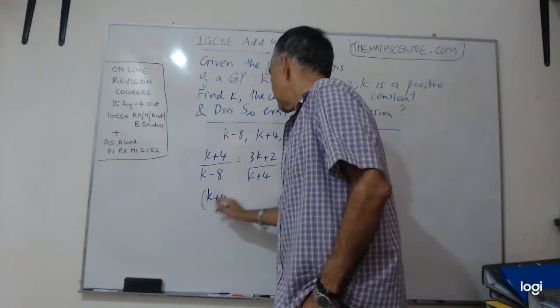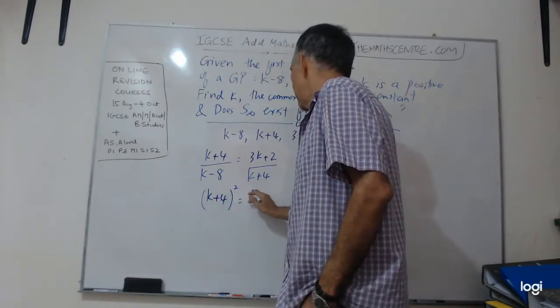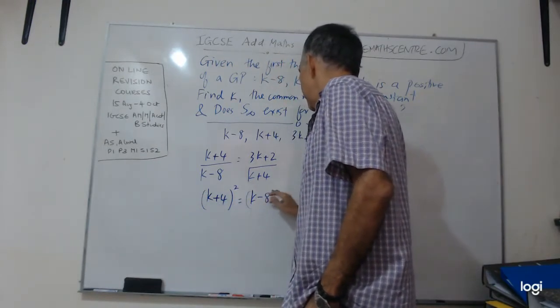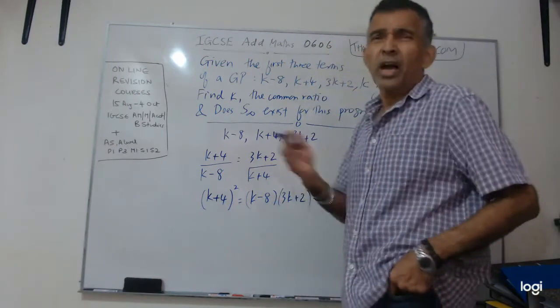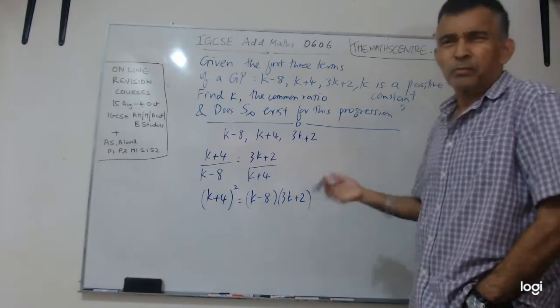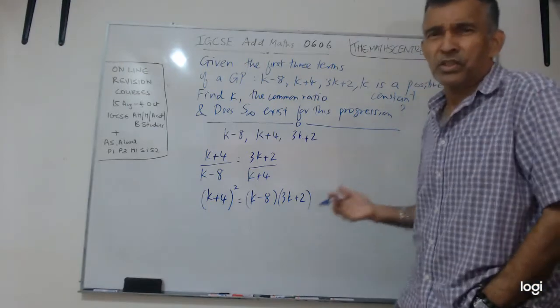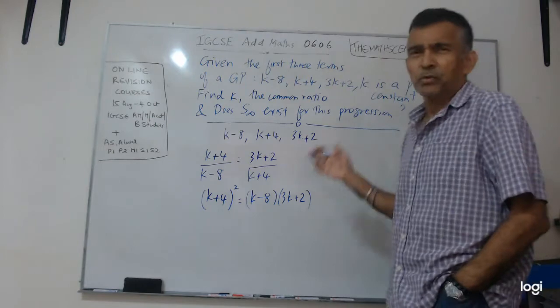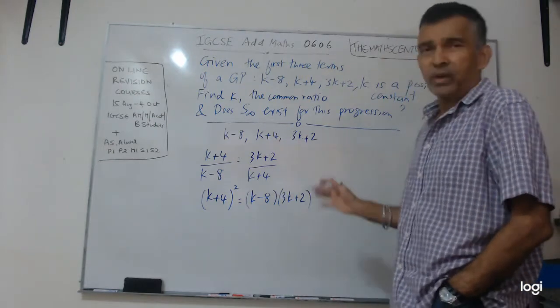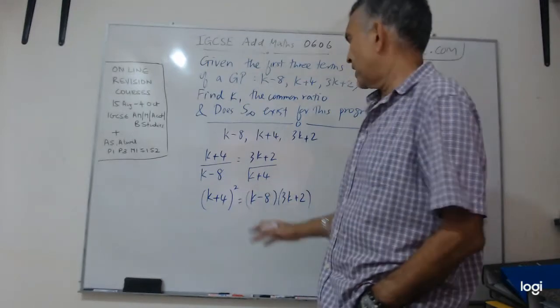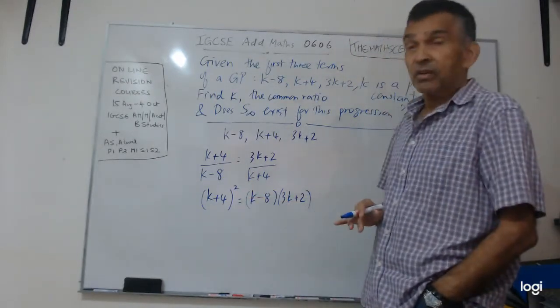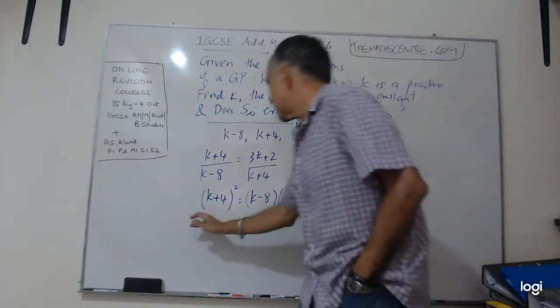I have K minus 8 and 3K plus 2. When you go to higher levels, you will see some shortcuts for this. When you start doing more statistics, like I have done in my life, you will find some, but let's not go there. Let's just do it the way we're expected to do it. So cross multiply, K plus 4 squared is K minus 8 times 3K plus 2.